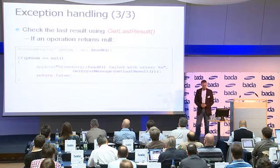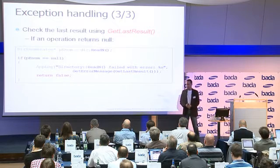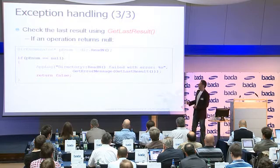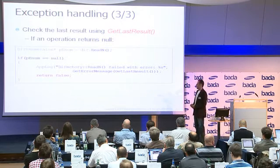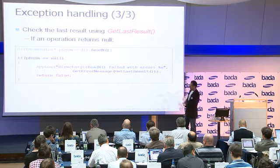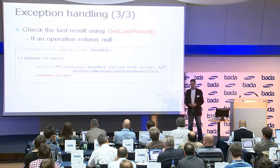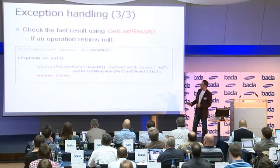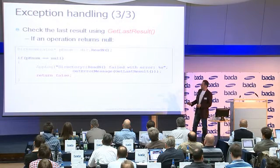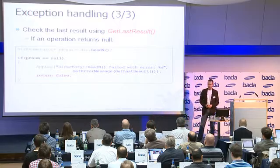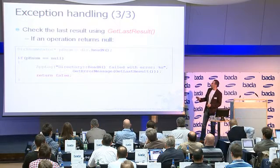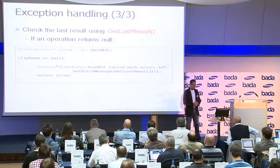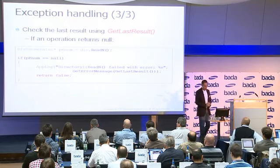There is another case when a method does not return our specific result type but something else — for example, a method called `read_n` that returns a pointer to an object. In that case we can still capture the exception: if the returned object is null, we can make use of a method called `get_last_result`, which returns the exception that happened.